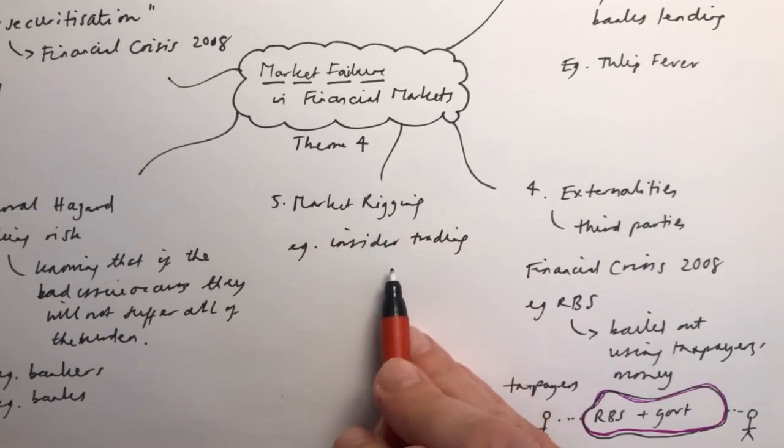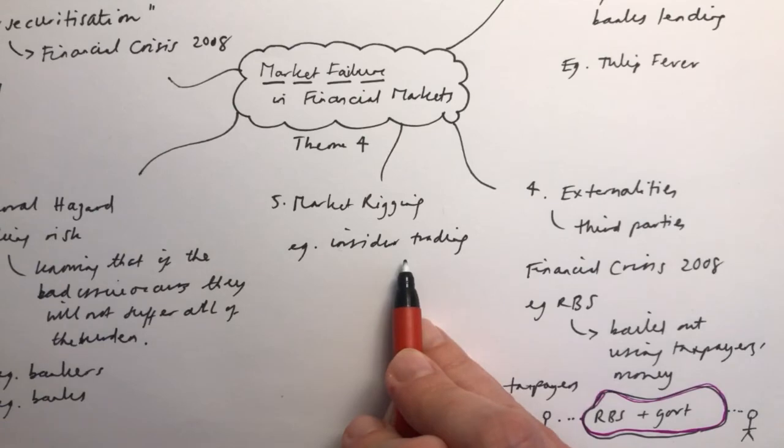They're using their knowledge for their benefit. If everybody else knew about this information as well, they would also be buying the shares. So in fact, the people taking advantage of the insider trading wouldn't be able to take advantage of the fact that nobody else knows about it.